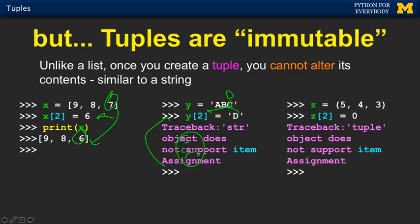That is a traceback. And the same thing happens with a tuple where we want to do z sub 2 equals 0 — and it says sorry, you cannot change. So these are not mutable. The difference is lists are mutable and strings and tuples are not mutable. But that's part of the efficiency of tuples — that they're not mutable.